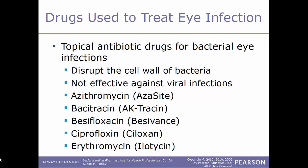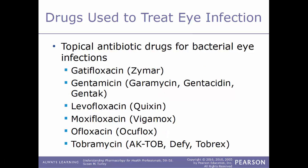Some examples of topical antibiotics: azithromycin, sold under the trade name AzaSite; bacitracin, sold under the name Actracin; besifloxacin, sold under the trade name Besivance; ciprofloxacin, sold under the name Ciloxan; erythromycin, sold under the trade name Ilotycin; gatifloxacin, sold under the trade name Zymar; gentamicin, sold under several trade names — Garamycin, Gentacidin, and Gentac.